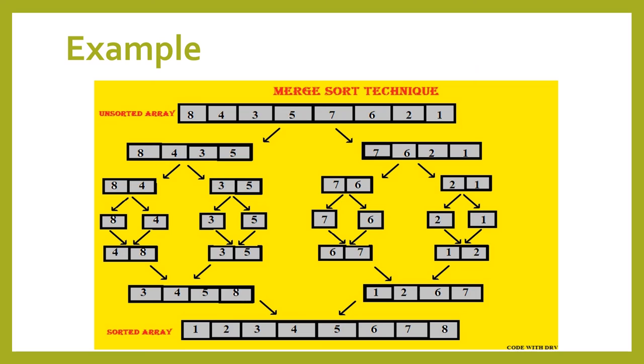Merge elements 8 and 4 to get 4 and 8. Next, 3 and 5 gives 3, 5 as they're already in order. Merge 7 and 6 to get 6 and 7. Then 2 and 1 gives 1, 2. The first level of merging is completed.